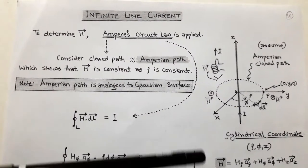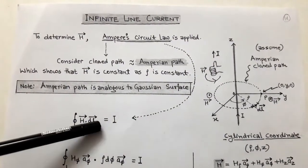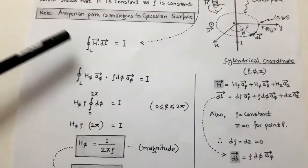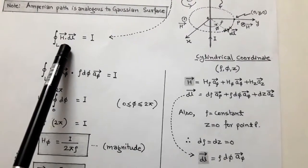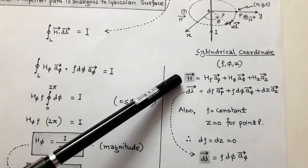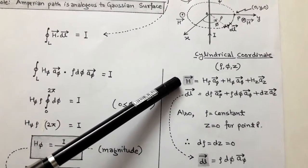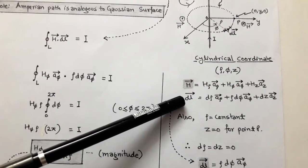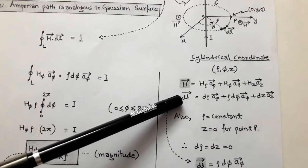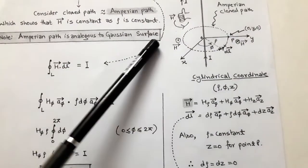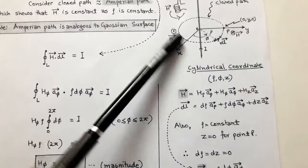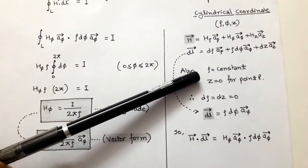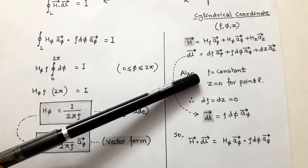Due to symmetry of the current element — the infinite line current — we apply Ampere's circuit law: closed line integration of H dot dL equals I enclosed. In the cylindrical coordinate system, H vector is written as H_rho unit vector rho plus H_phi unit vector phi plus H_z unit vector z. The differential length dL vector in cylindrical coordinates is: d_rho unit vector rho plus rho d_phi unit vector phi plus dz unit vector z. Since the Amperean closed path lies on the xy-plane at z equals zero and rho is constant, d_rho and dz both equal zero. Therefore, dL vector reduces to rho d_phi unit vector phi.